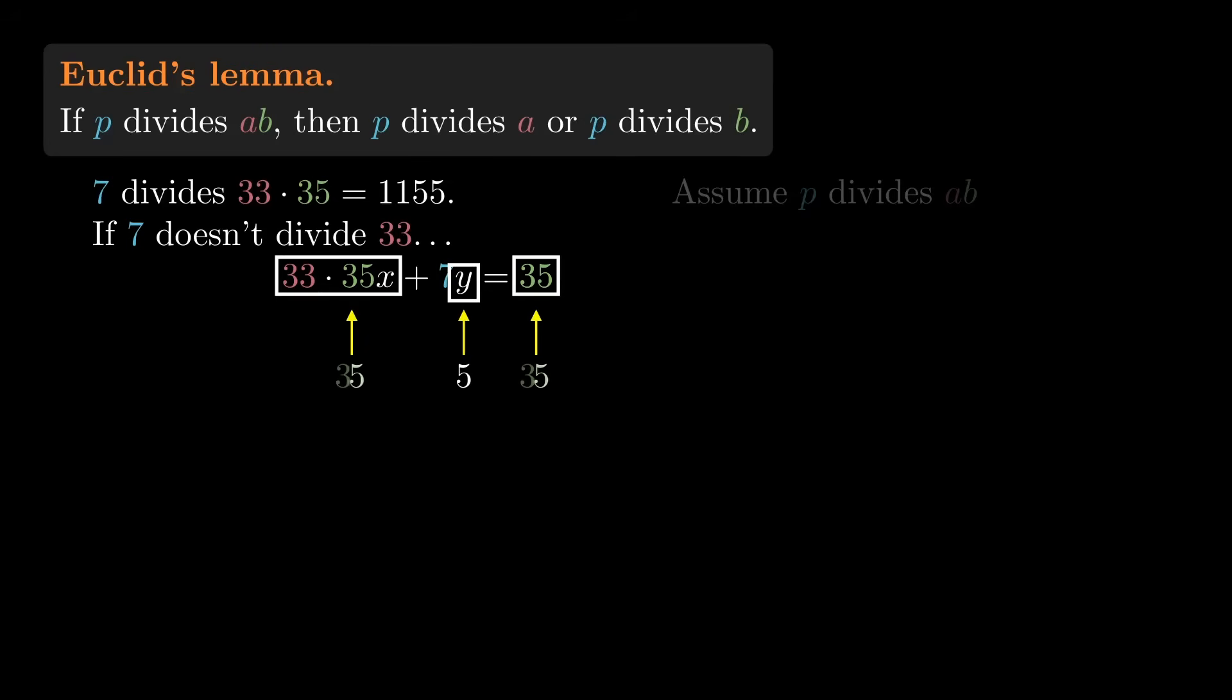Actually, the first and last terms are divisible by 35. And since we're not assuming that 35 is divisible by 7, then for all we know, y is actually divisible by 35. So let's tentatively write y as 35 times some number z. Now, the question is whether we can find x and z.